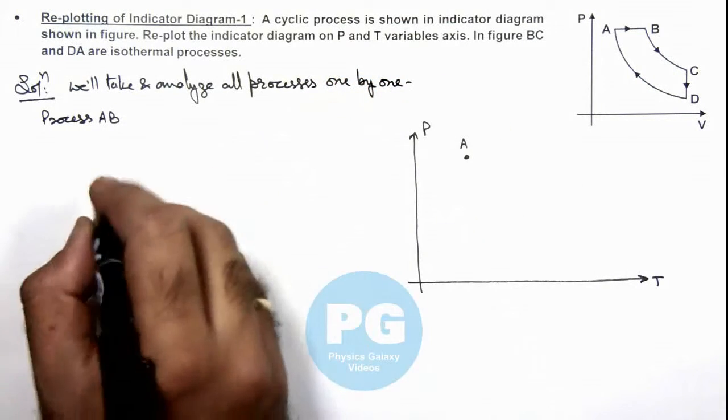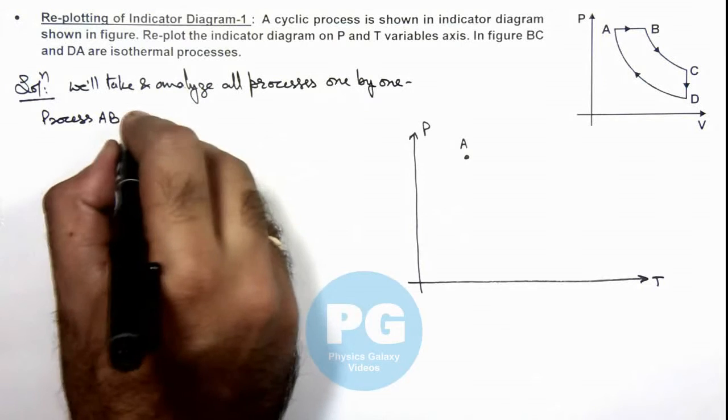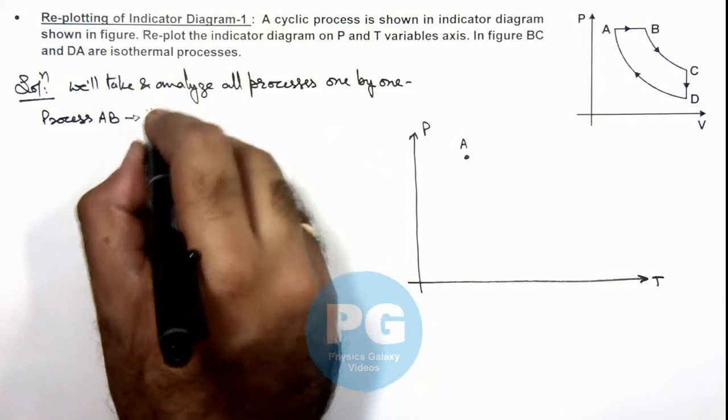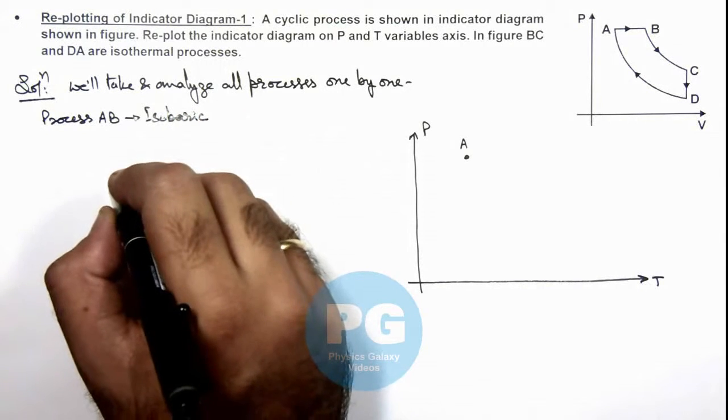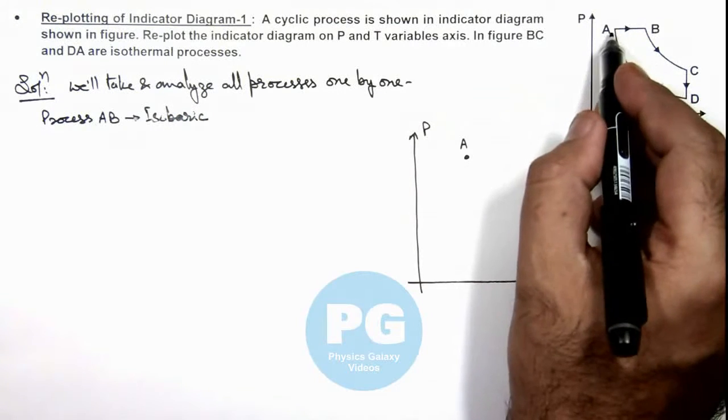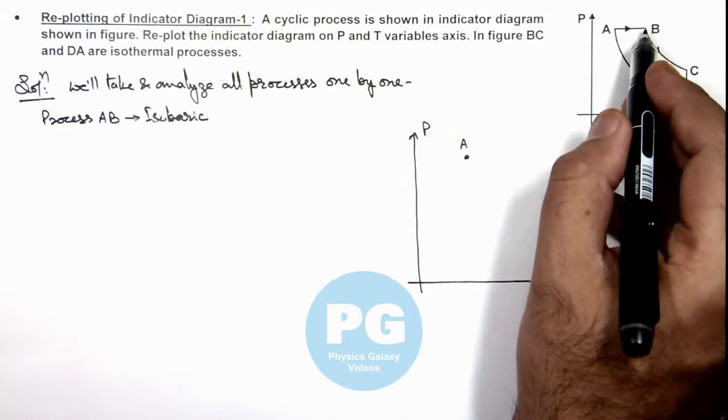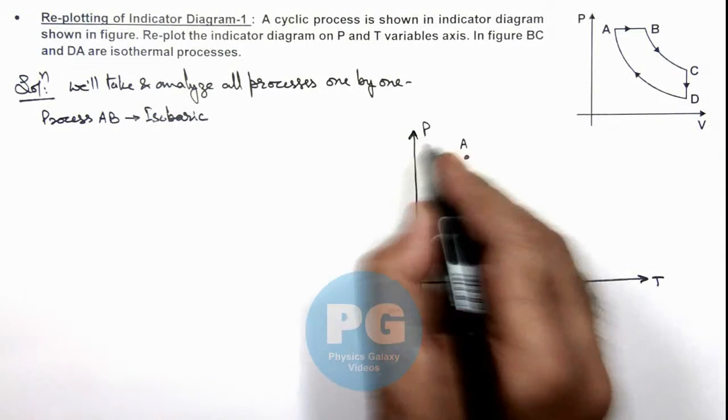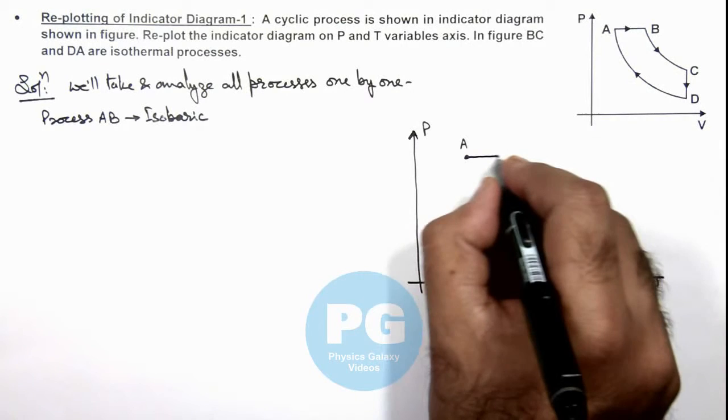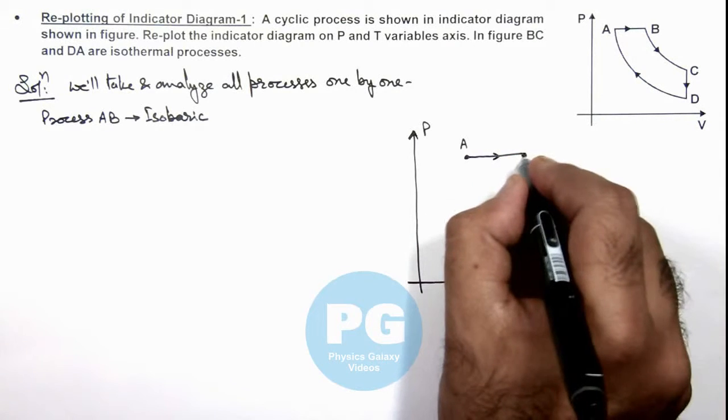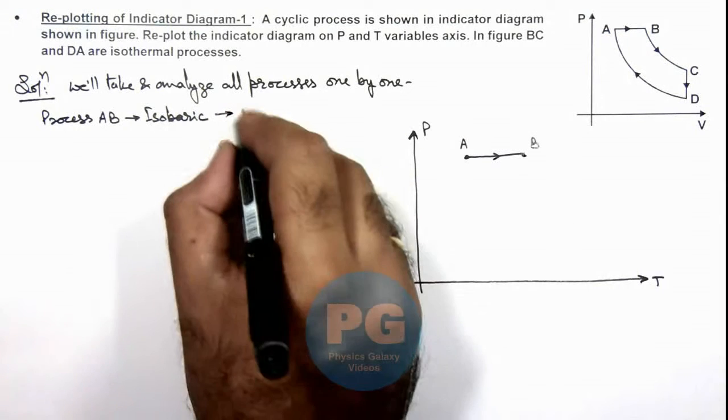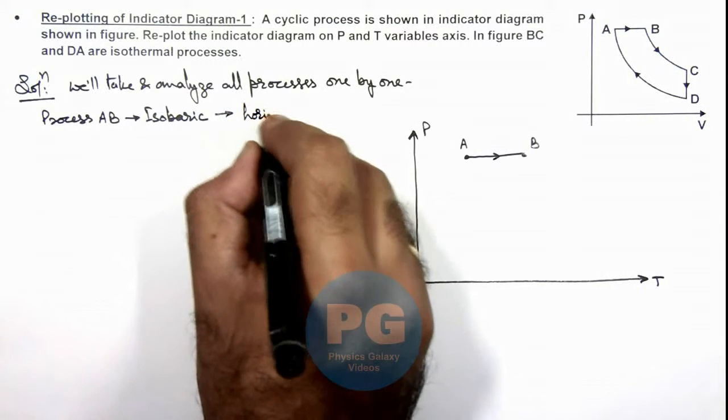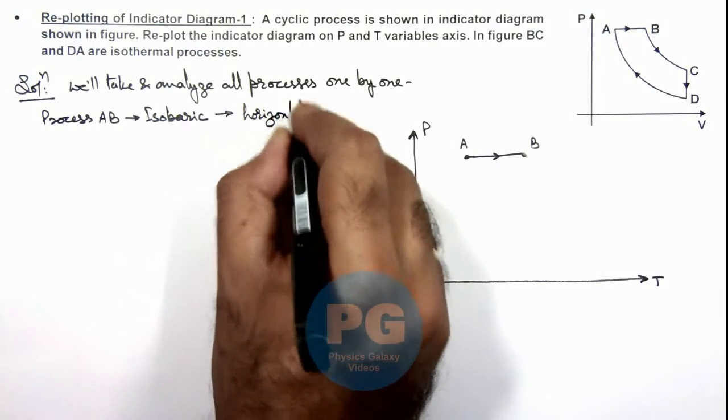So in this situation, process AB, we can see this is an isobaric process. For an isobaric process, pressure remains constant, so from A to B it will be a horizontal straight line. So on the PT axis, it will also be a horizontal line.